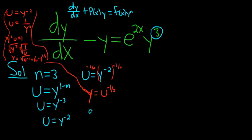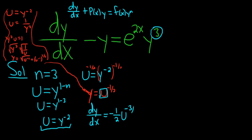Now we compute dy/dx, and this is a key step. Since u equals y to the negative 2 and y is a function of x, u is also a function of x. Using the chain rule, we bring down the negative one-half, leave the inside untouched, then subtract one: negative one-half minus one equals negative three-halves. We multiply by the derivative of the inside, du/dx. So dy/dx equals negative one-half · u to the negative three-halves · du/dx.